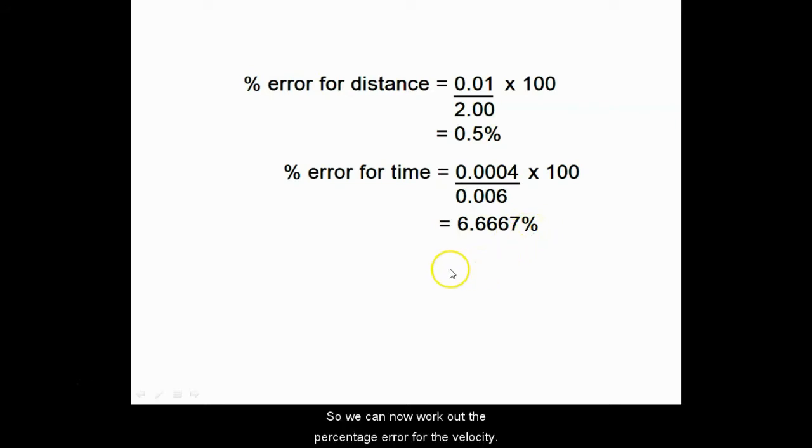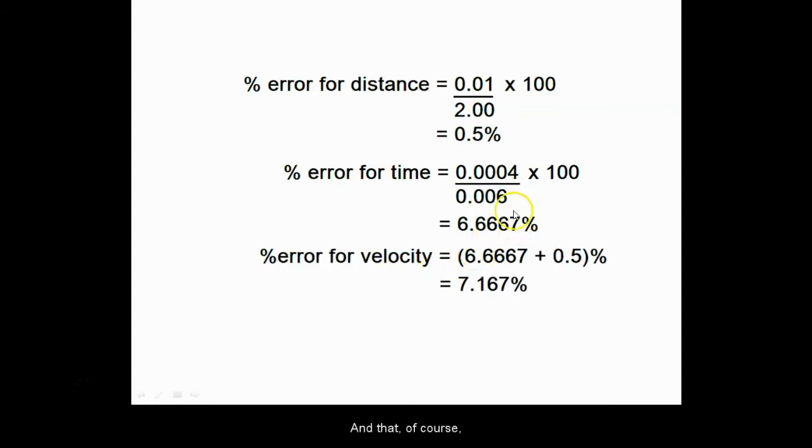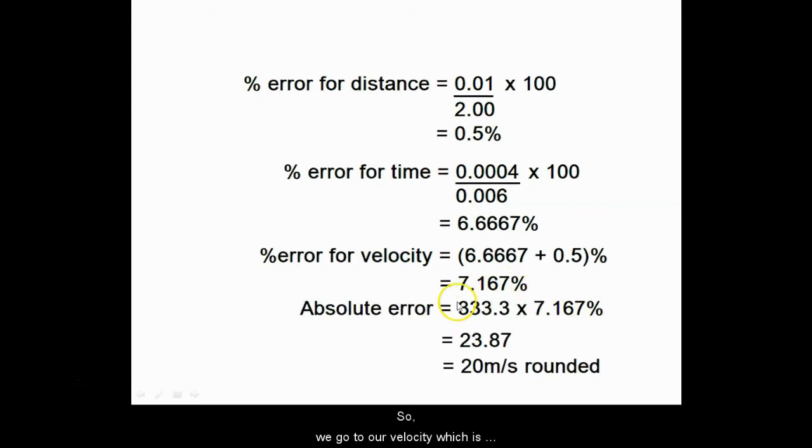So we can now work out the percentage error for the velocity. That of course is going to be the sum of these two uncertainties, so that gives us a figure of 7.167 percent. If we find 7.167 percent of our velocity, which is calculated at 333.3, this gives us a figure of 23.87.